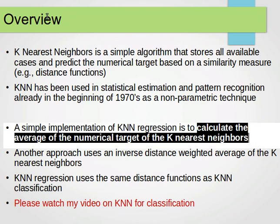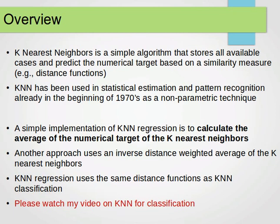Another approach uses an inverse distance weighted average of the k-nearest neighbors. But the most common way maybe is to just find the average. KNN regression uses the same distance functions as KNN classification.